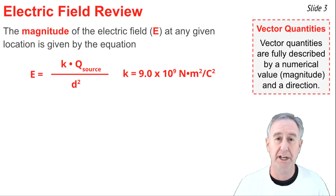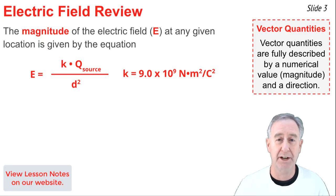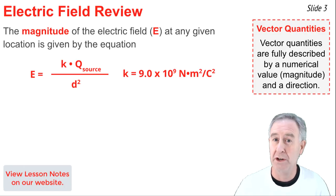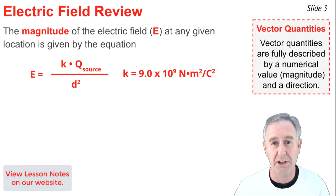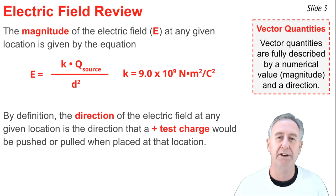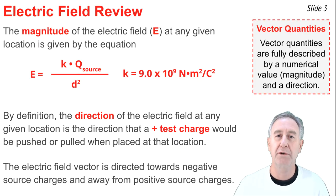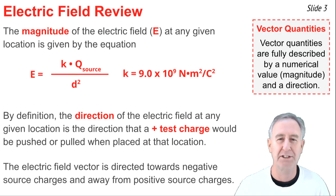The electric field is a vector quantity, and like any vector quantity, it's fully described by two properties: the numerical value, or magnitude, and the direction. The magnitude of the electric field vector is directly proportional to the quantity of charge on the source charge creating the electric field, and inversely proportional to the square of the distance of separation from that source charge. Being a vector, the electric field also has a direction, and by definition, the direction of the electric field vector is the direction that a positive test charge would be pushed or pulled when placed at any given location around the source charge. By logical extension, the direction of the electric field vector is always directed towards negative source charges and away from positive source charges.